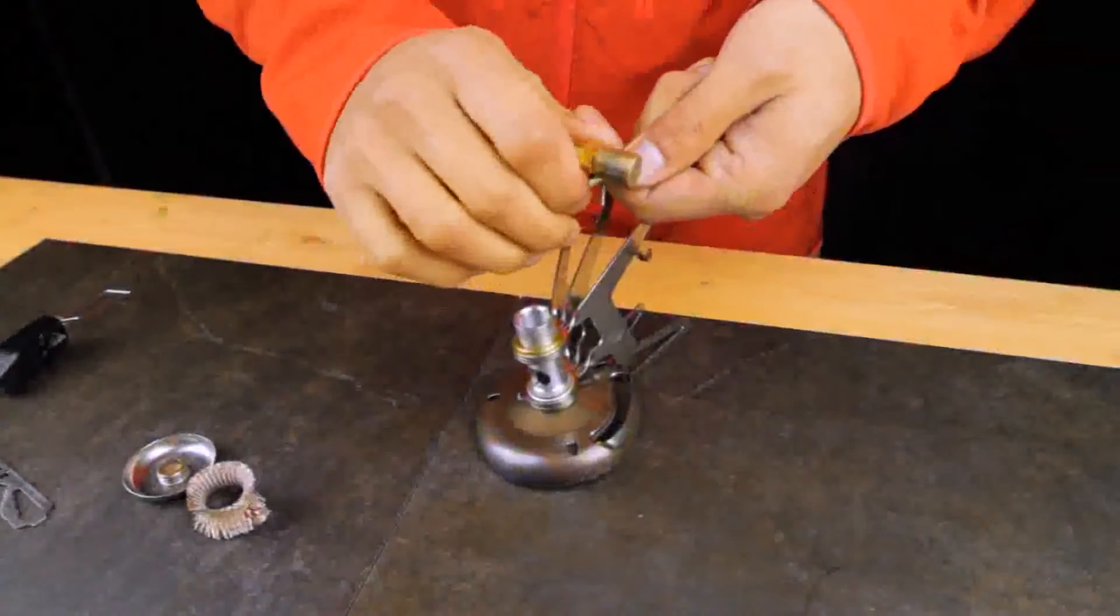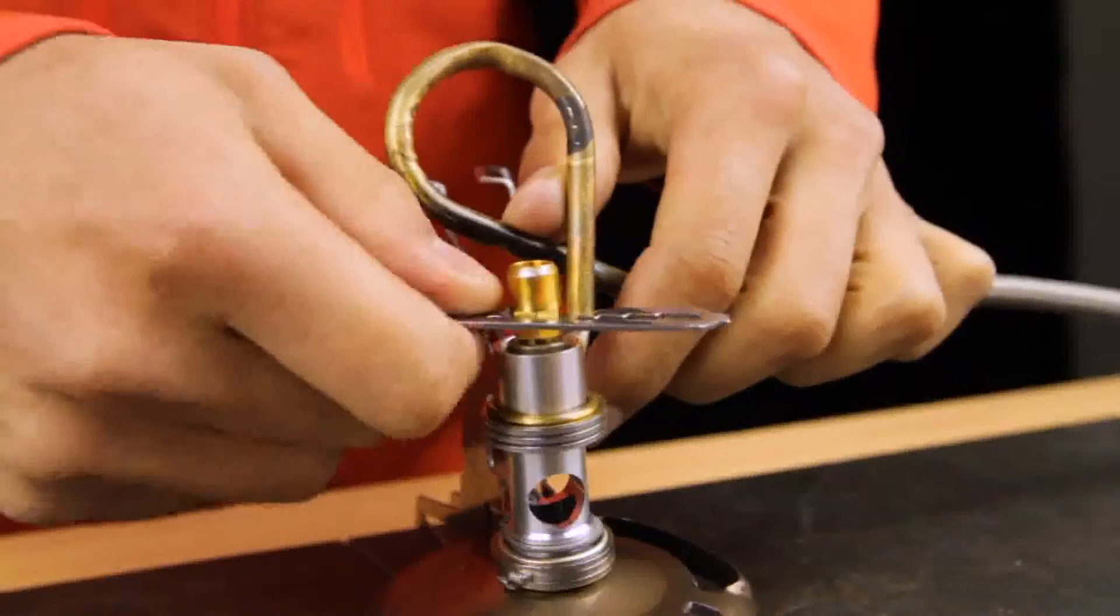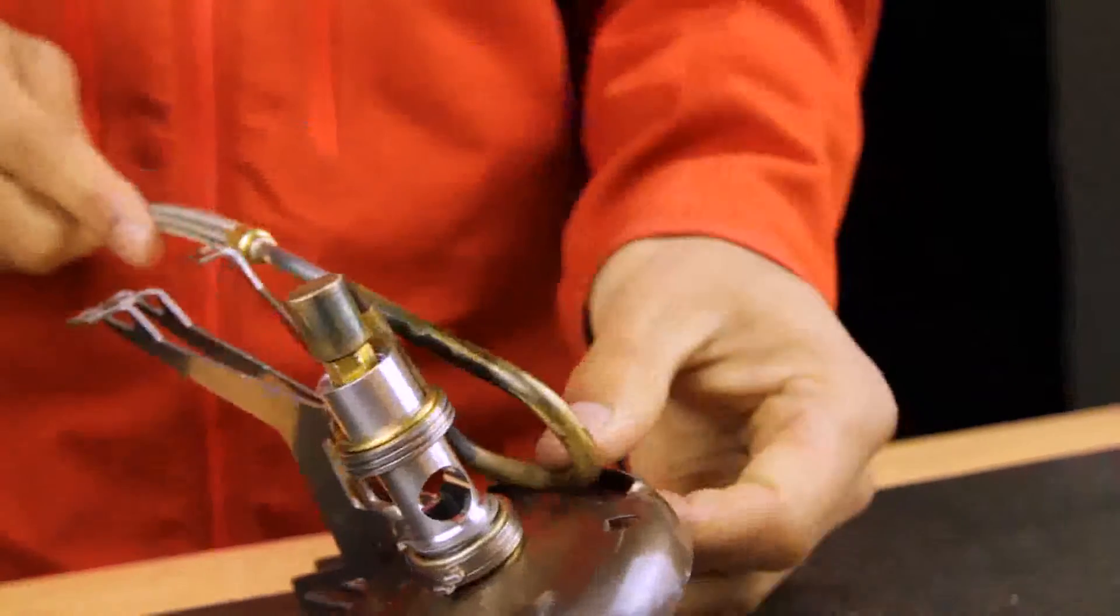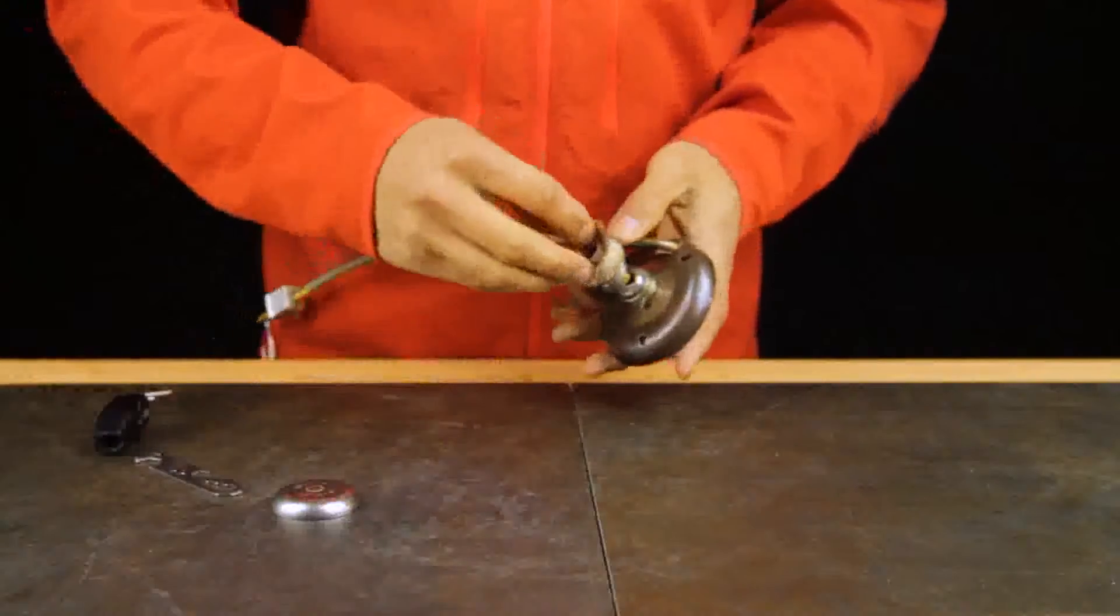Replace the fuel jet with the one corresponding to the intended fuel type and snugly tighten it in place with the jet and cable tool. Reinsert the elbow into the mixer tube in the correct orientation. Replace the wick and priming cup to reassemble the stove.